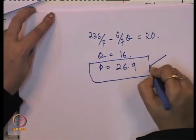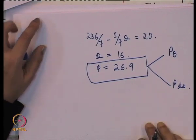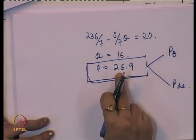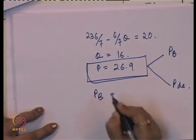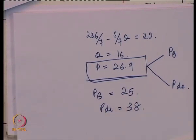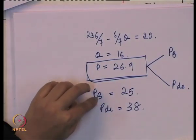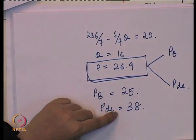So when there is no discrimination, both markets are charged a price of 26.9. When there is discrimination, market B is charged 25 and market DC is charged 38. The key point is that the monopolist always seeks the price level that maximizes profit — charging a high price in the inelastic market and a low price in the elastic market.